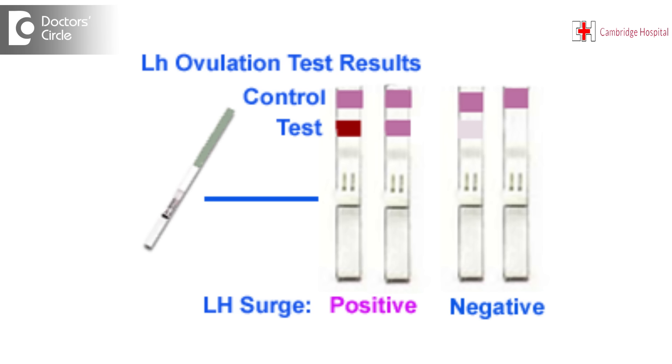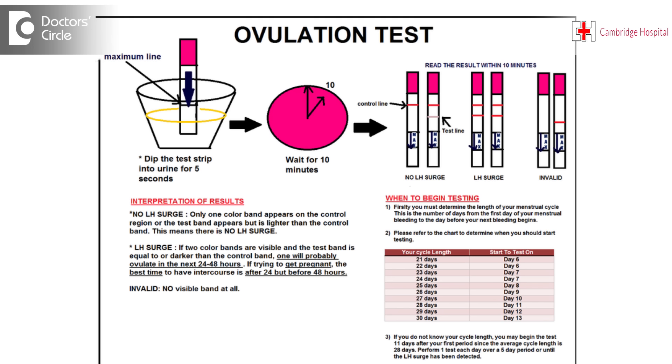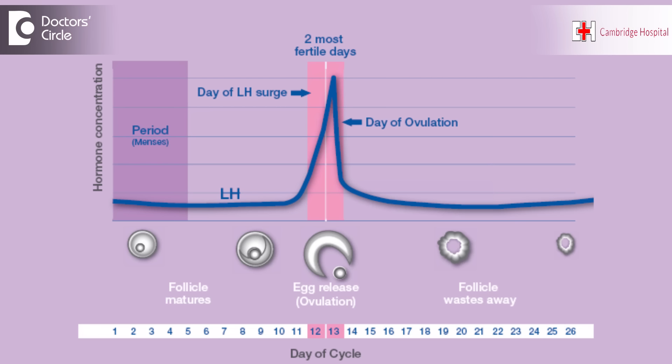Sometimes the ovulation would have occurred when you have done your ovulation test, but still the test could be negative. Why? Because normally this ovulation test depends on a hormone called luteinizing hormone, or LH. There is a slight increase in this hormone LH just before the ovulation.